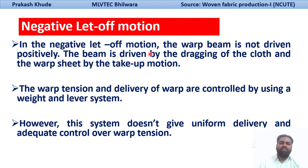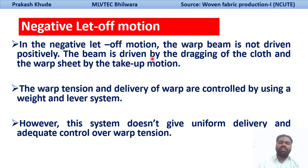So ultimately the warp sheet has been released from the warp beam due to the dragging of the cloth by the take-off motion. And if you are dragging this cloth at the front, the tension has been exerted on your warp sheet. So the releasing of your warp sheet has been done from your warp beam negatively — there will not be any drive system. Due to the take-off motion, the drive ultimately goes to your let-off.